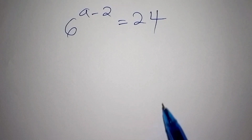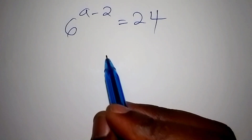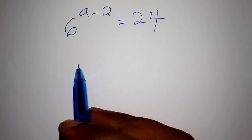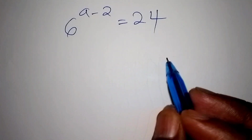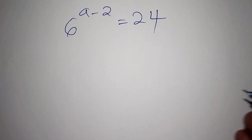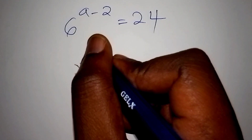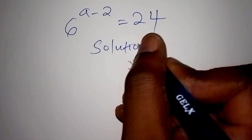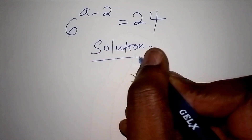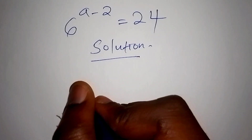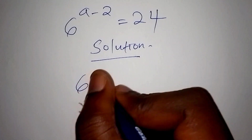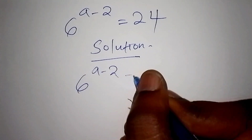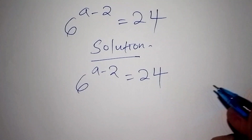Hello viewers. Are you wondering how to solve such an amazing maths problem? Worry not. I want us to work it out within the shortest time possible. So let's start with the solution. We have 6 to the power of a minus 2 is equals to 24.